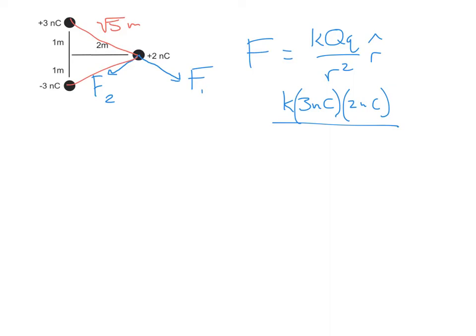So if I square the square root of five, that's going to be five. Now the nano part — I was being sloppy because I didn't feel like writing out times ten to the negative ninth. I cut a few corners there. Let's pause the video for a moment and calculate the magnitude. We get that F1 equals 1.08 times ten to the negative ninth newtons.